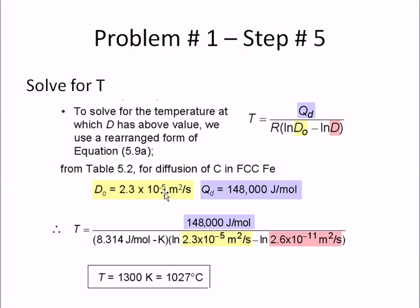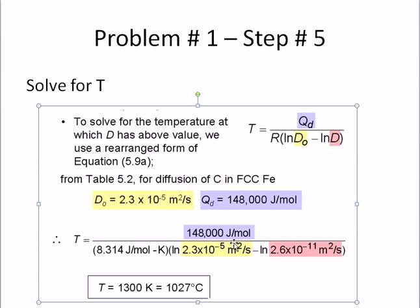We have these two numbers. These are given in the back of the book, from the table, and we plug these in: right here, right here, right here. Use the R from the back of the book, and we get T. And that's how you solve this very basic diffusion problem.